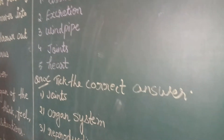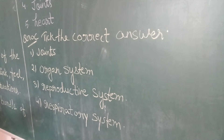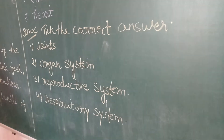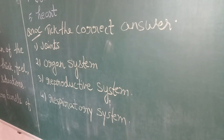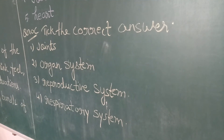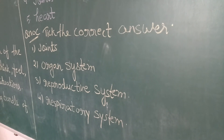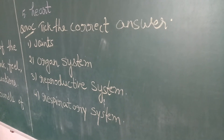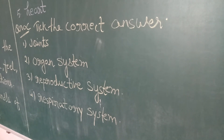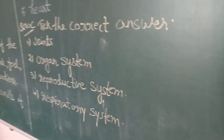Question number C — take the correct answer. Number 1: Two or more bones are connected, and this is called joints. Number 2: A group of organs that work together to perform a particular task is called an organ system. Number 3: The system that helps to produce offspring is the reproductive system. Number 4: The system responsible for breathing is known as the respiratory system. Once you breathe, let's go — your body will be smart.